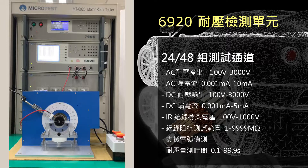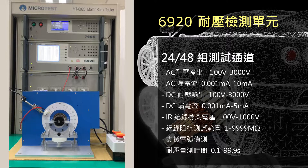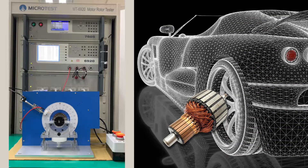Connect the other end to the silicon steel. Compare the leakage current and insulation resistance under both AC and DC voltage.